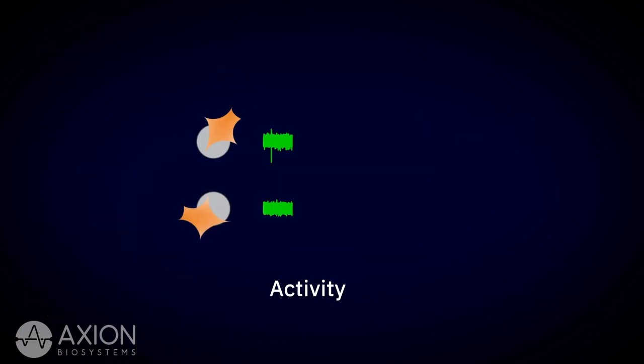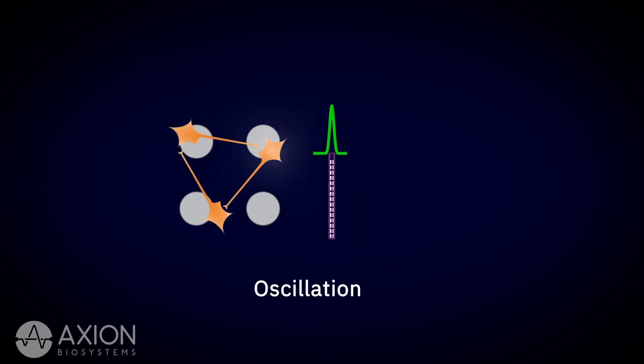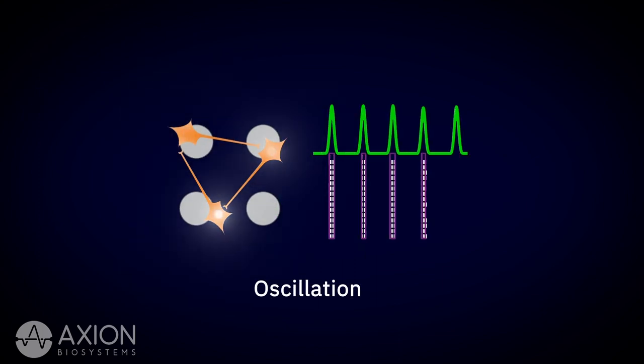By looking at different metrics that describe the firing patterns, such as activity, synchrony, and network oscillations, an activity profile of the culture is made.